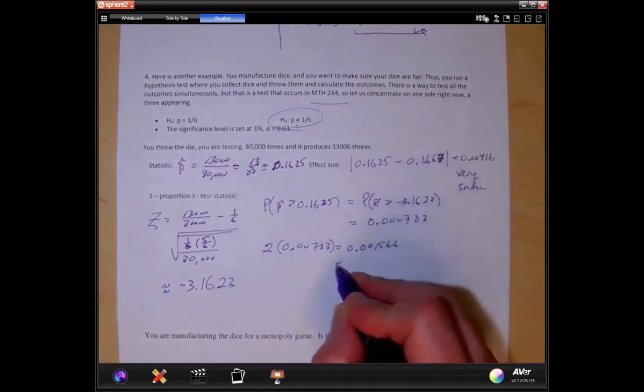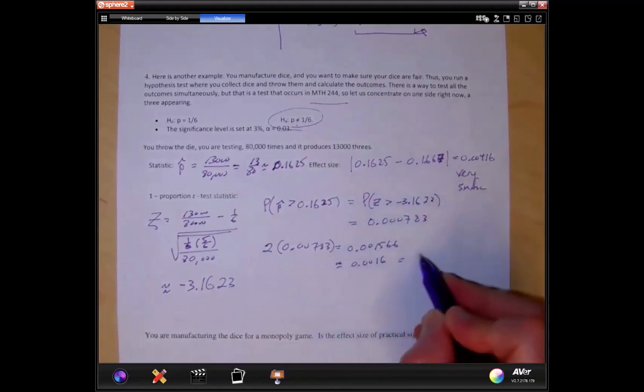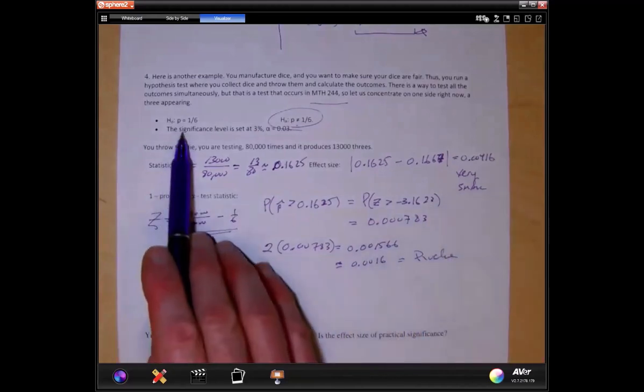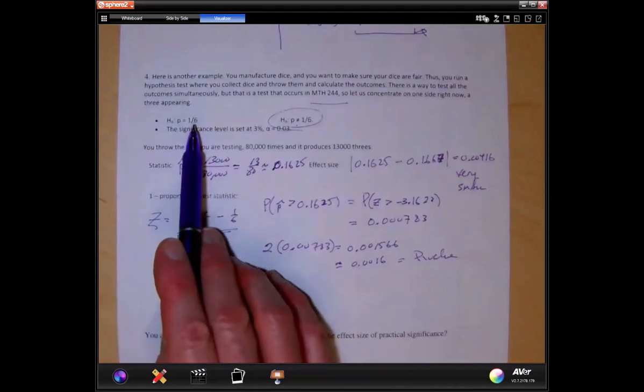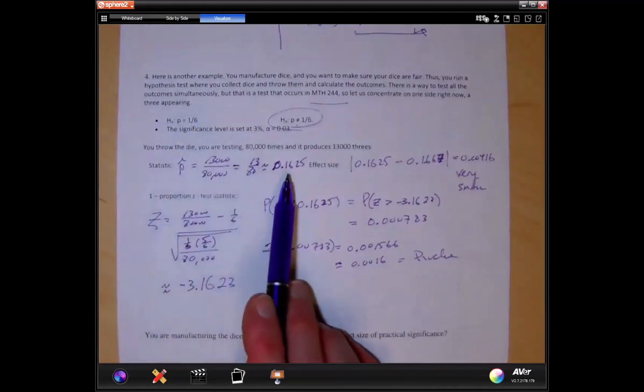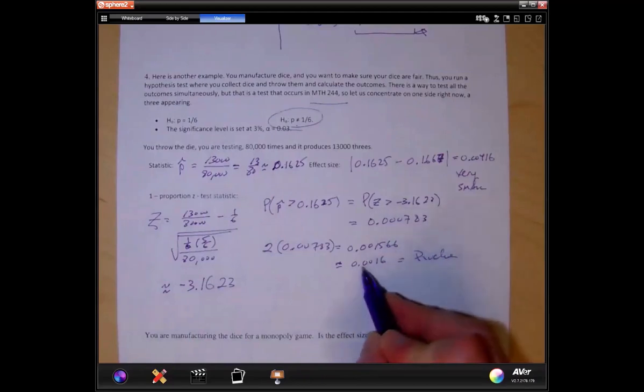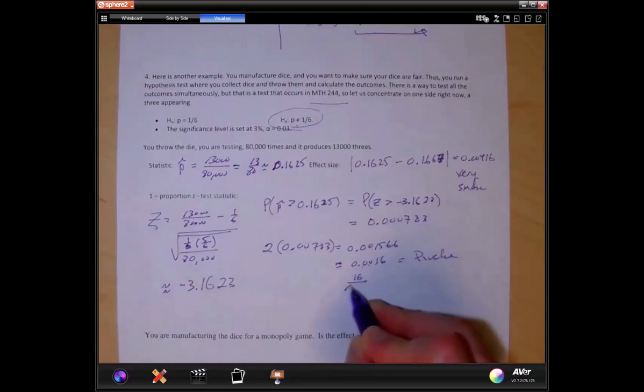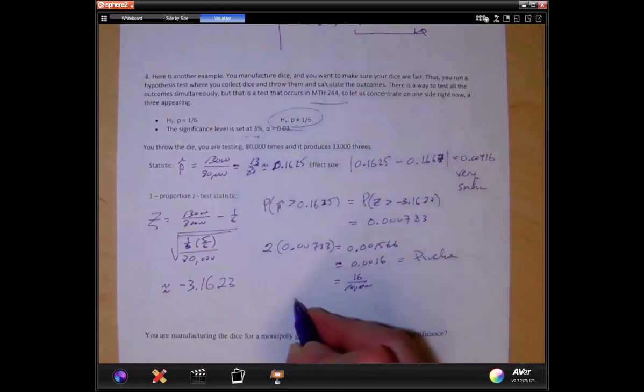I'm going to approximate it to 0.0016. That is my p-value. That's saying if the probability of a certain chance of one of the sixes coming up is 1/6, the probability of seeing 0.1625 or something more extreme in either direction is, well, how many times does that happen? It would occur 16 times out of 10,000 attempts. Very rare.